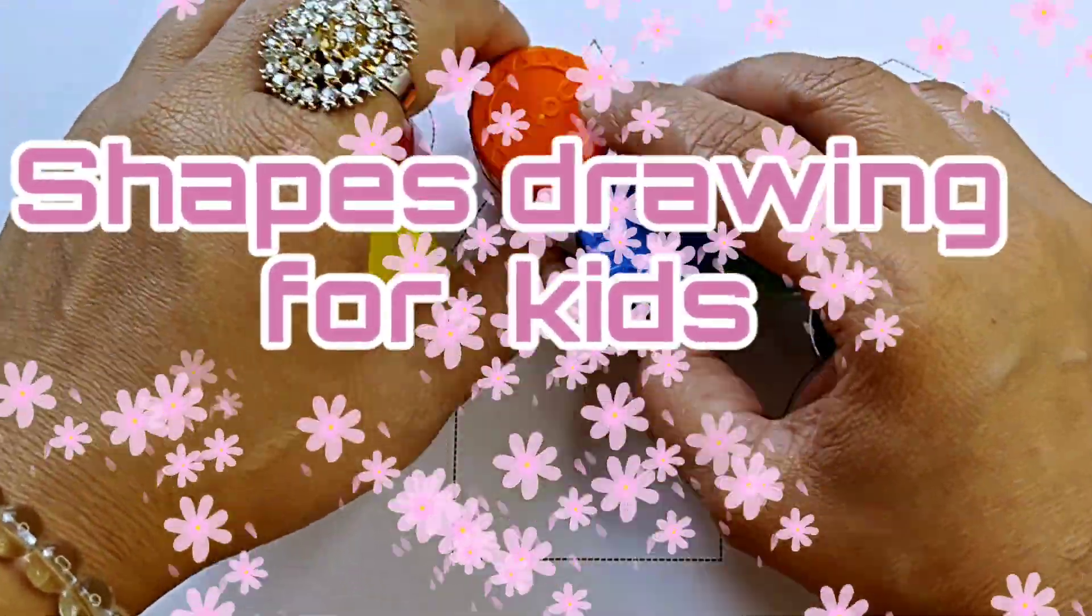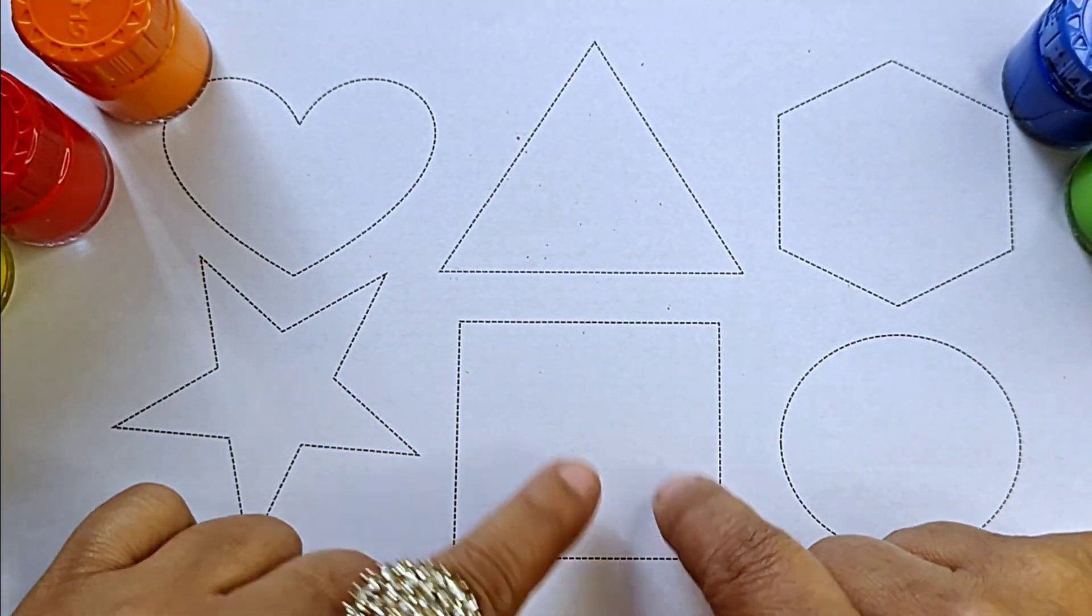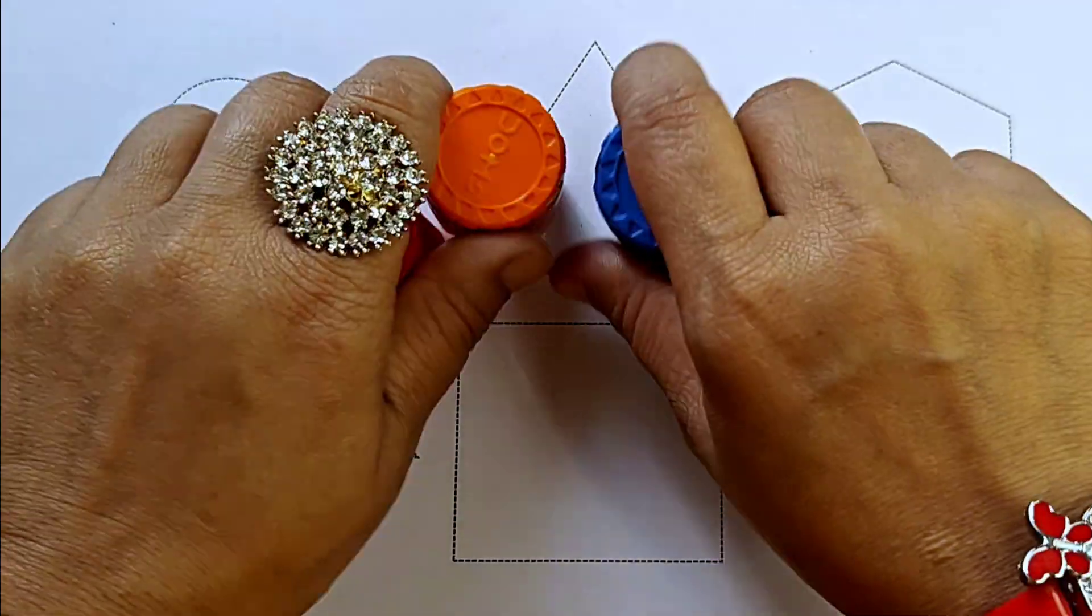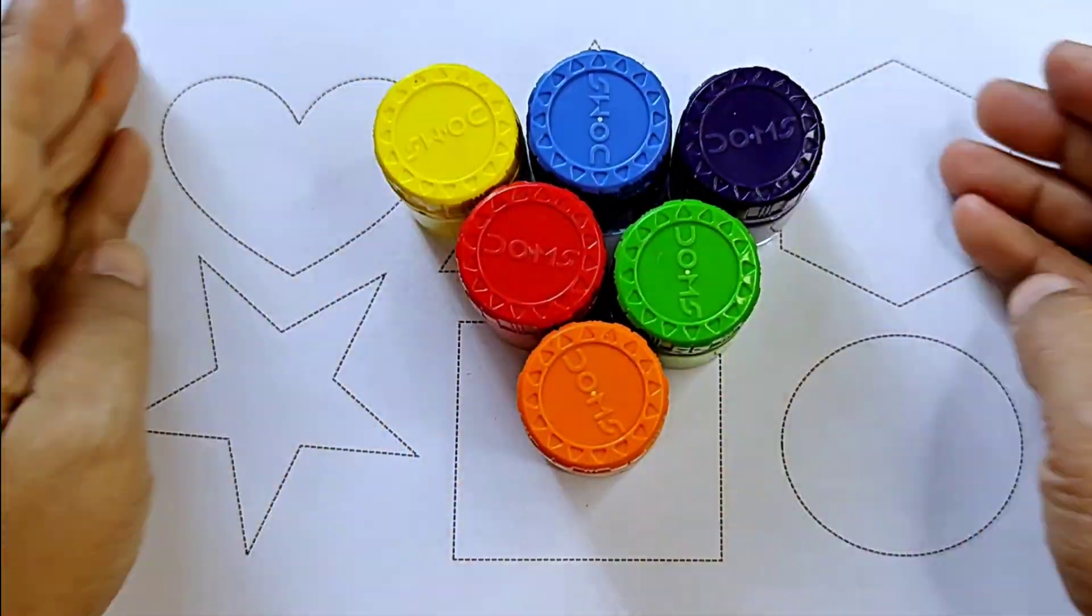Hello kids, let's learn some shapes and color names. These are our colors and these are our shapes.